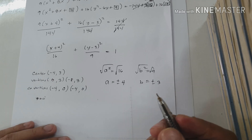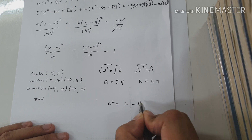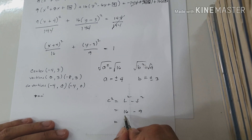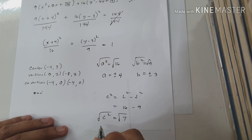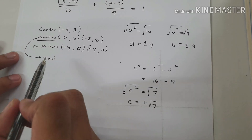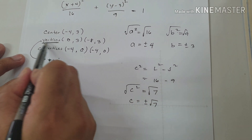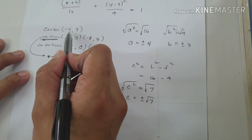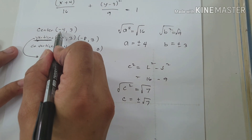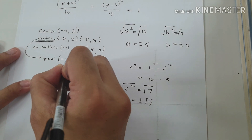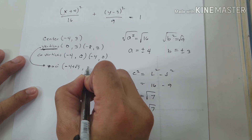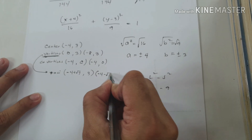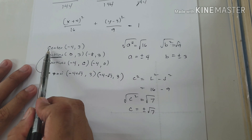To find foci, we use c squared equals longer minus shorter: 16 minus 9 is 7, so c is positive and negative square root of 7. Foci are always aligned with the vertices. Adding c to h: (negative 4 plus square root of 7, 3) and (negative 4 minus square root of 7, 3). That is how we find the center, vertices, co-vertices, and foci of the given equation.